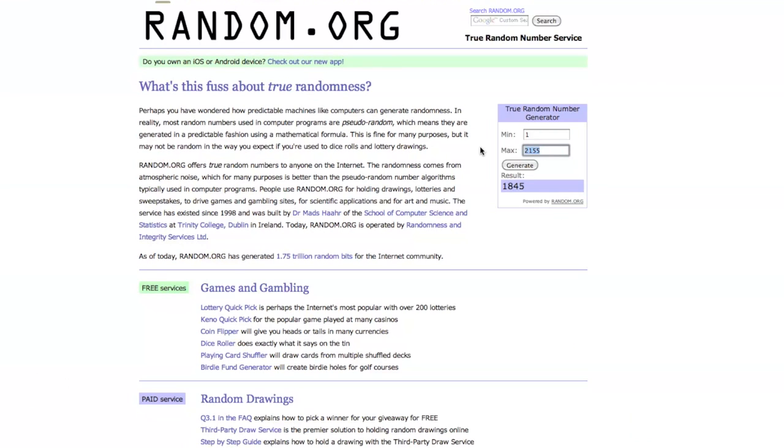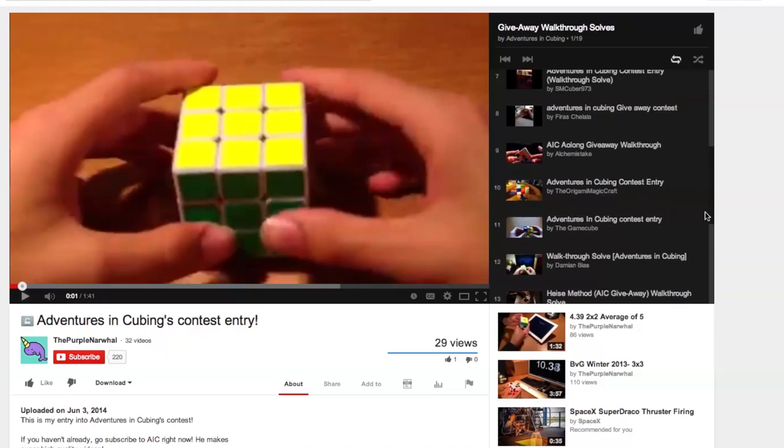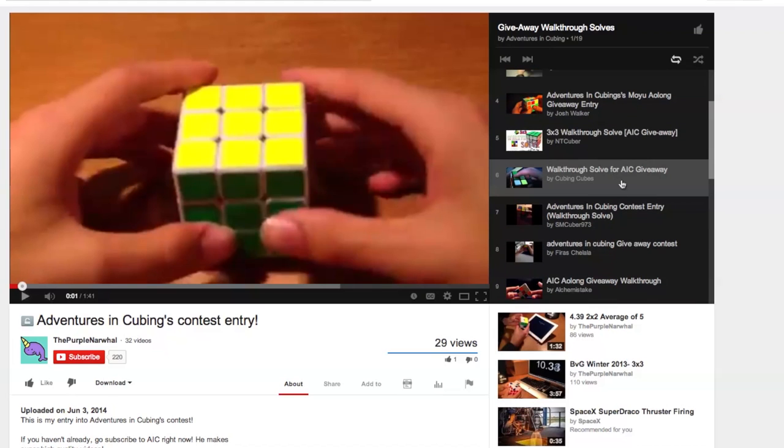So now I'm going to go back to the randomizer. I'm going to type 19. And whichever one comes up here will go to the playlist and that will be the winner. The winner is 6. So when we go over here, we find cubing cubes.